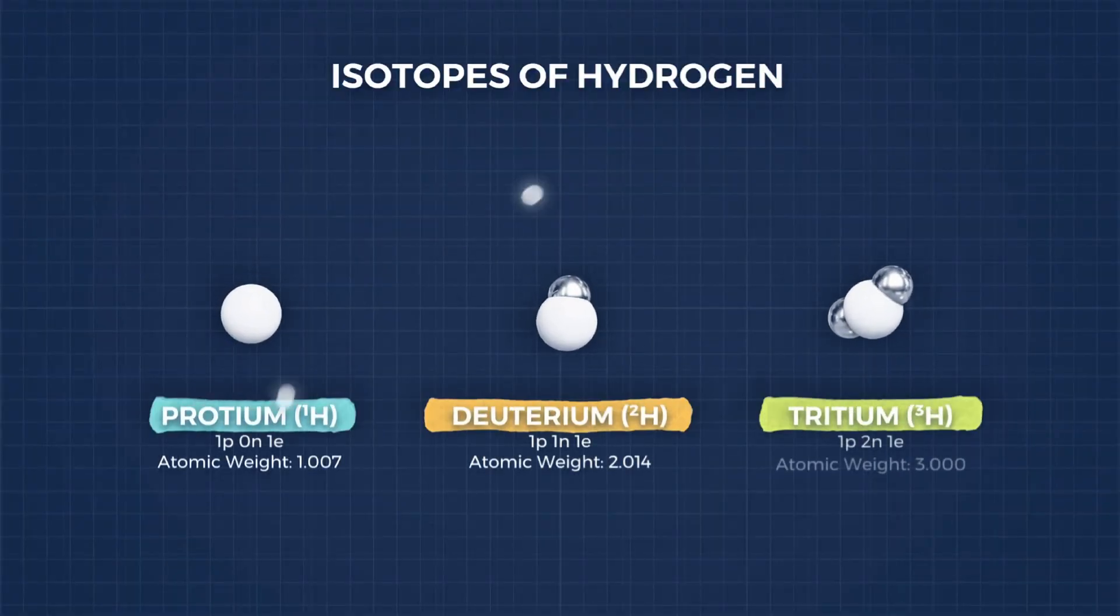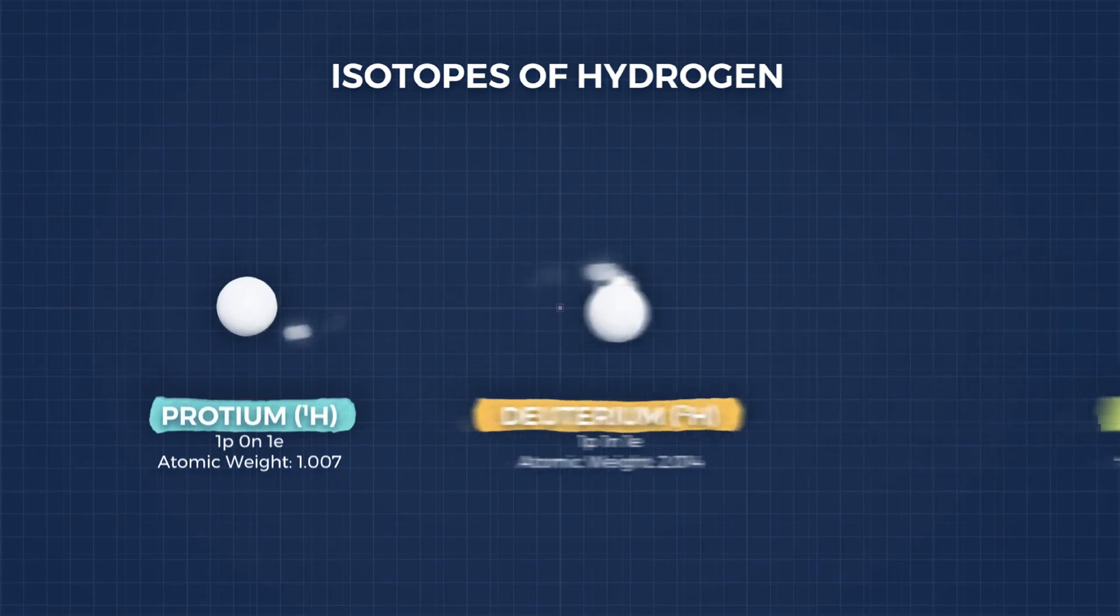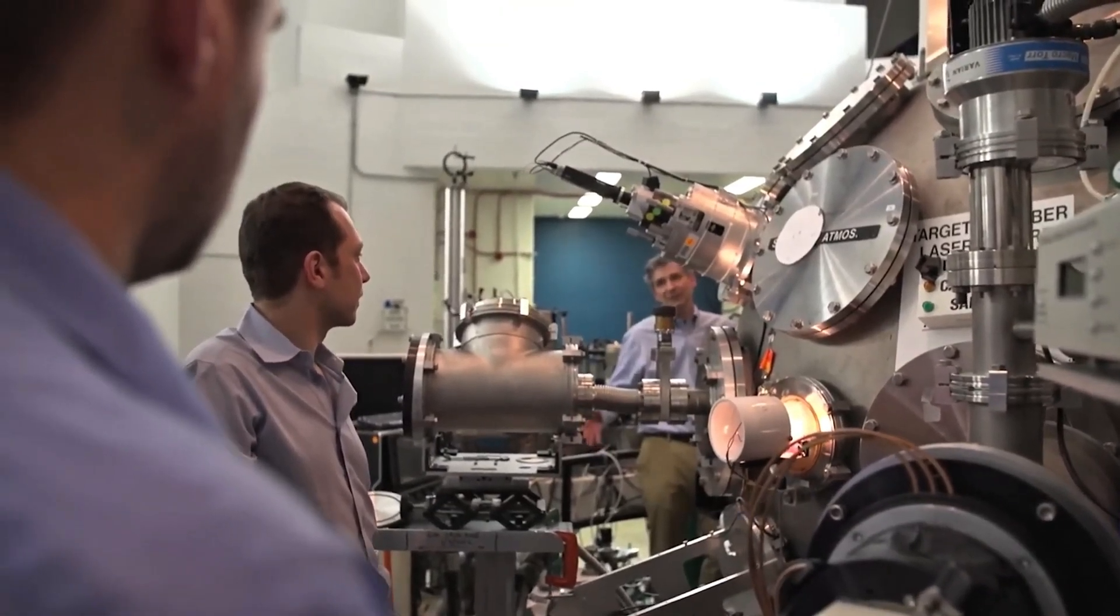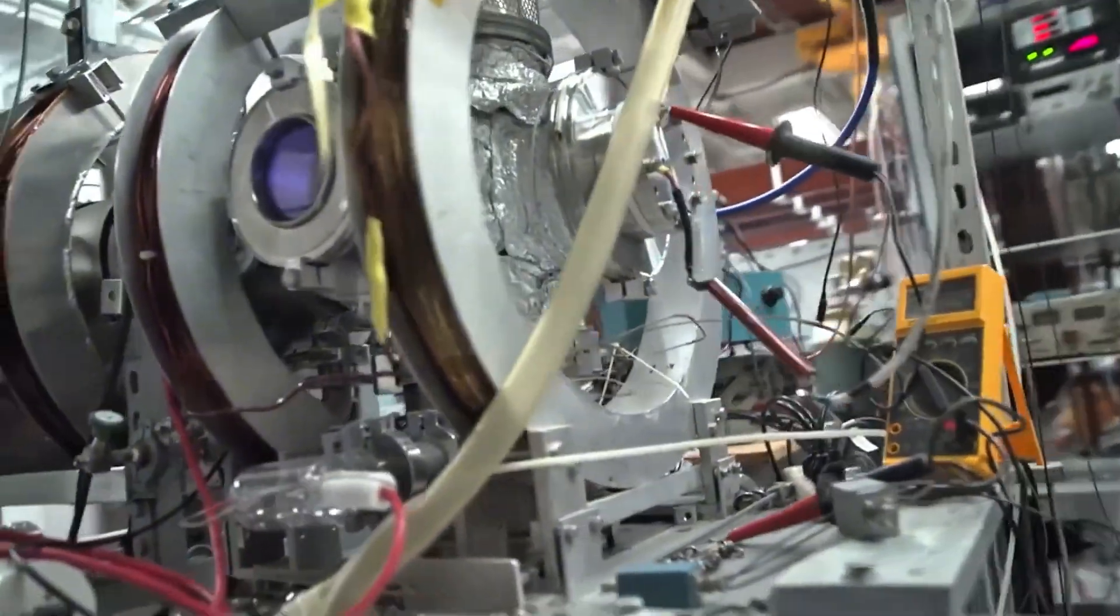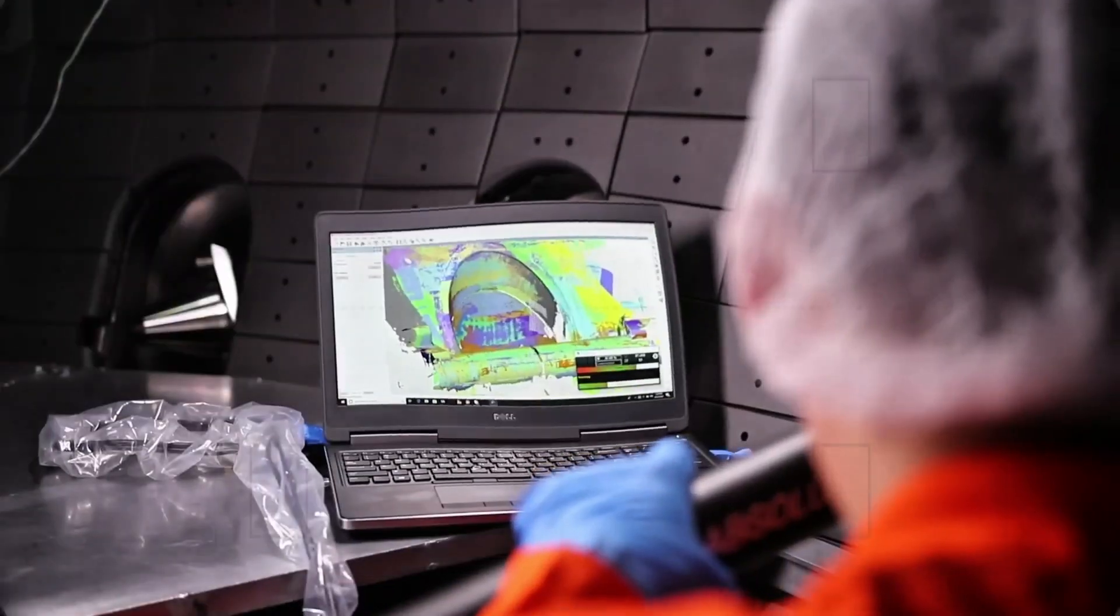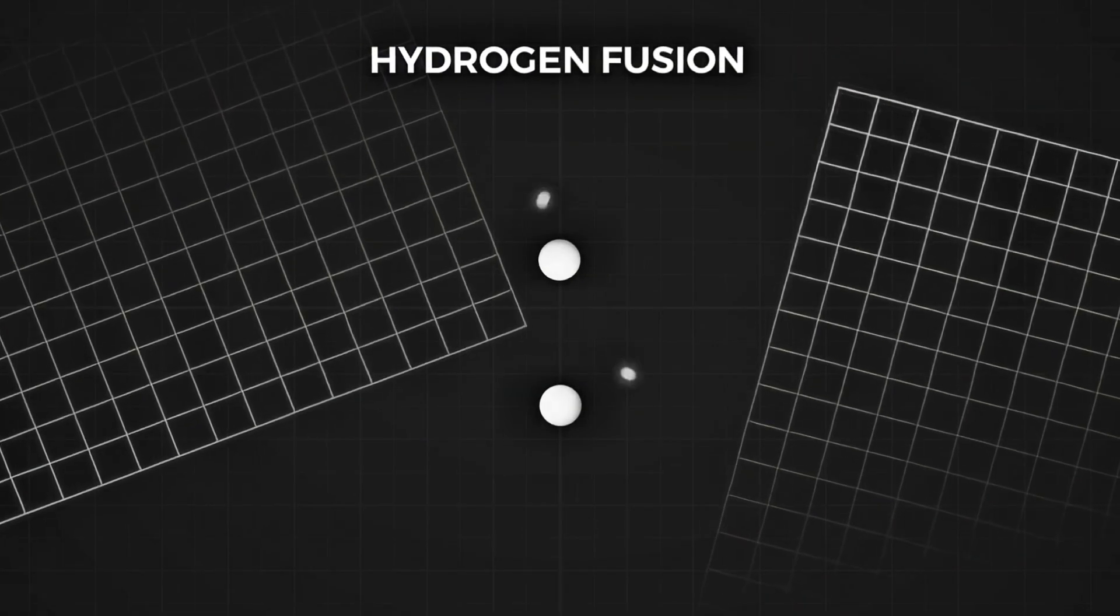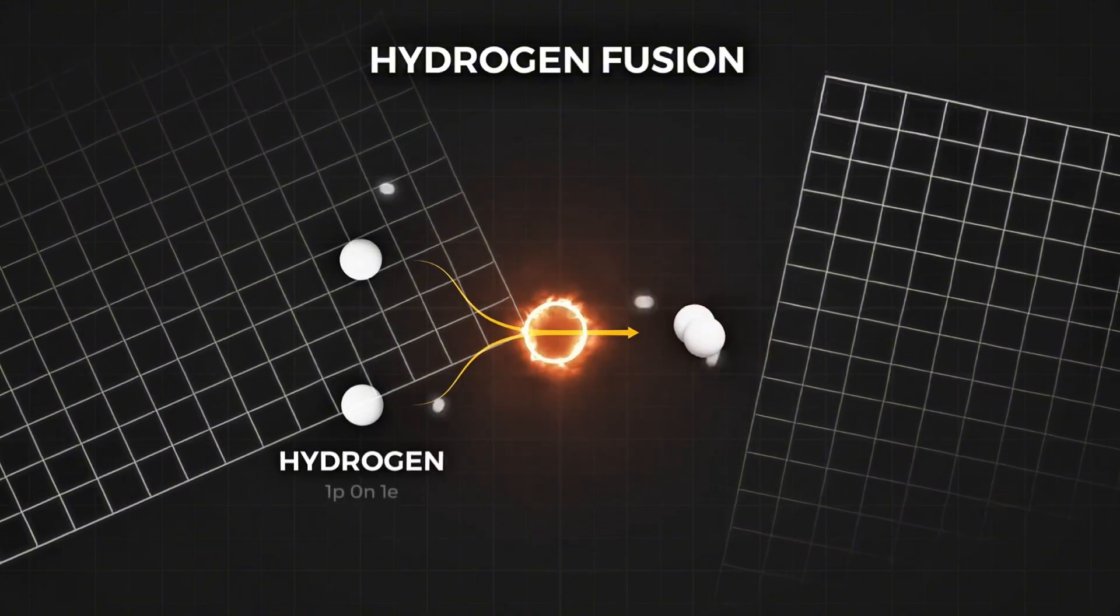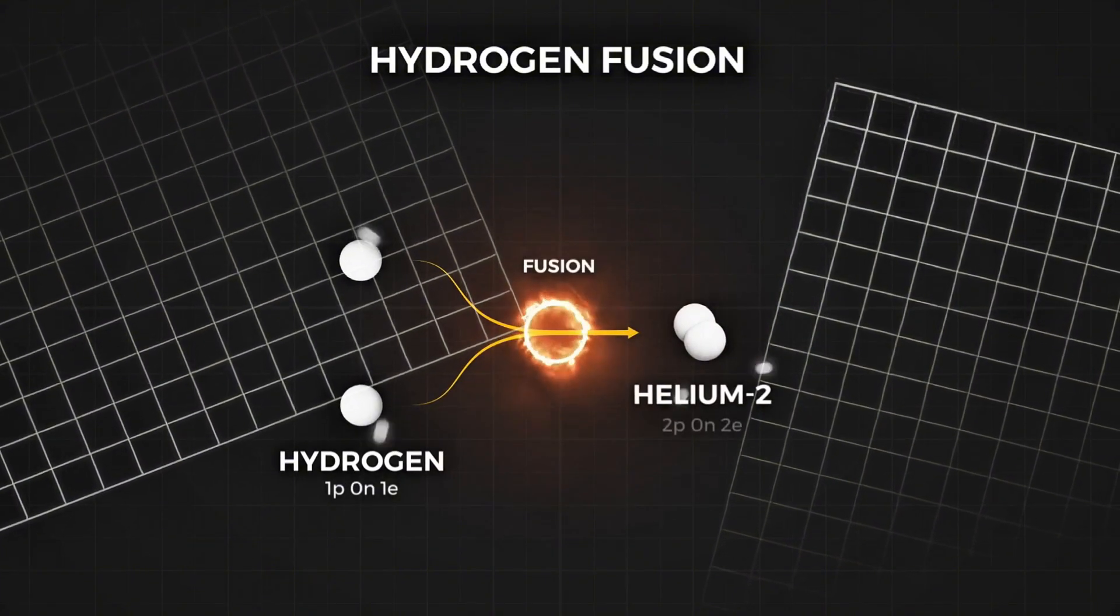Achieving fusion requires extremely high temperatures, on the order of 100 million degrees Celsius, turning the gas into a plasma of charged particles. At these temperatures, the hydrogen nuclei move fast enough to overcome their electrical repulsion and fuse when they collide.